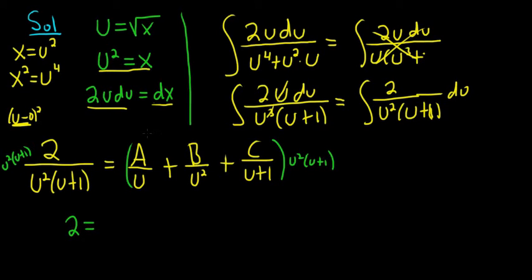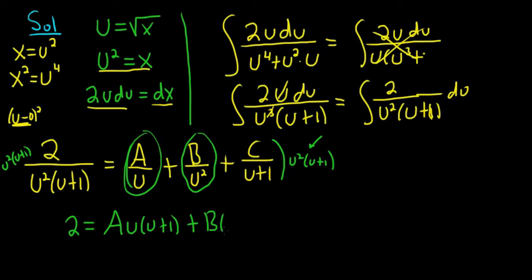and let's see, we have A over u times this. So we're going to be left with A, one of the u's goes away, so we get u, u plus 1, plus. Now B over u squared, looks like the u squared goes away, so we're left with B, u plus 1. And then last but not least, we have C over u plus 1 times this. So we're left with C, u squared.